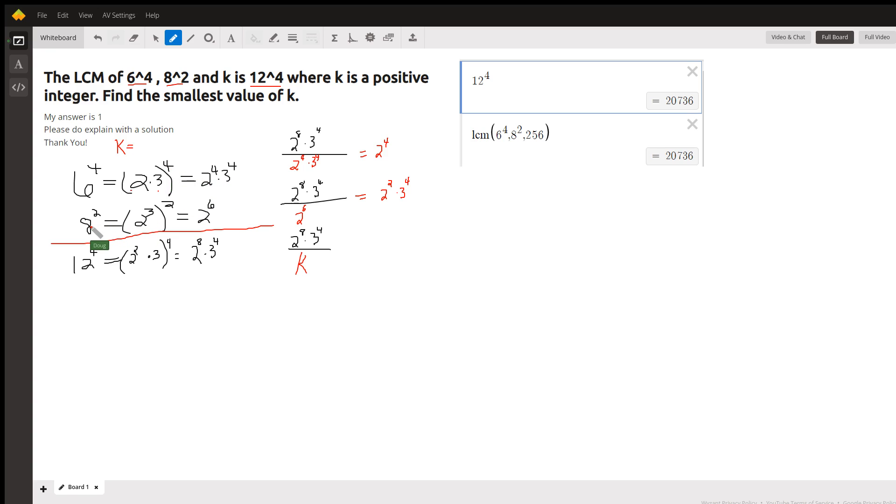And 8 squared is the same as 2 cubed squared, which is 2 to the 6th.